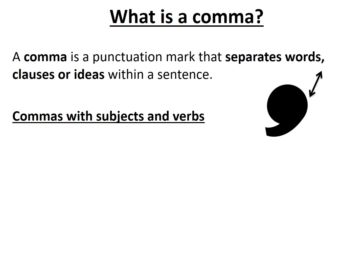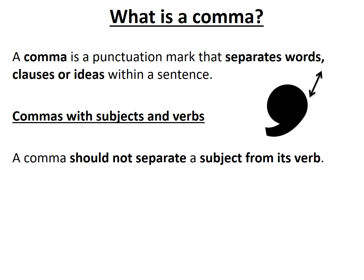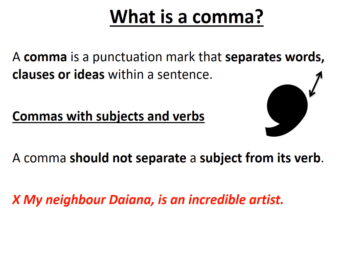A comma should not separate a subject from its verb. Let's look at an incorrect example first: 'My neighbour, Diana, is an incredible artist.' In this sentence the subject is Diana and the verb is the present tense of the irregular verb 'to be' — is. As you can see, the comma is separating the subject from the verb. That is far from ideal.